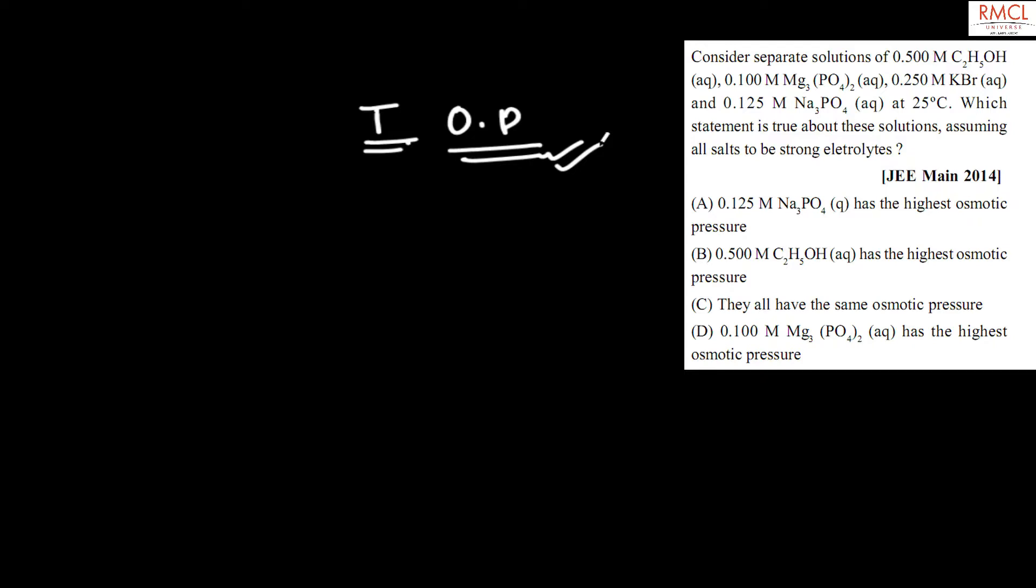When we solve this, 0.500 M C2H5OH dissociates as two ions, so the van't Hoff factor will be one. When multiplied by 500, 500 M of solution concentration will be obtained.